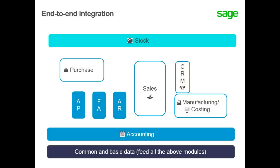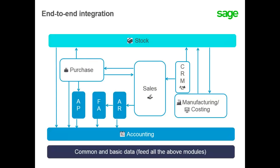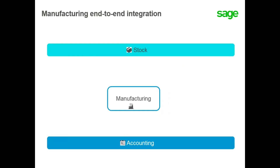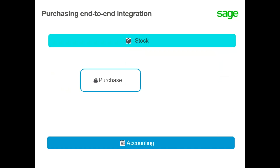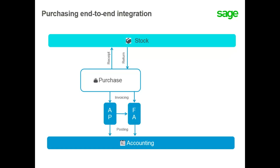You can see how these different modules interact with one another. Let's take a look at the end-to-end integration capabilities of Sage X3 for each module. In this example, there's a sales order for a manufactured product. Stock will be allocated and consumed during the manufacturing. If a shortage occurs, a reordering is triggered. The assembled product is reintegrated into stock as a finished product. Calculated costs of the manufacturing are posted in accounting. Stock that is not available is the concern of the purchasing module. The principal function in the purchasing process is to order the goods, receive the merchandise or ship merchandise, post invoice, and pay the supplier.